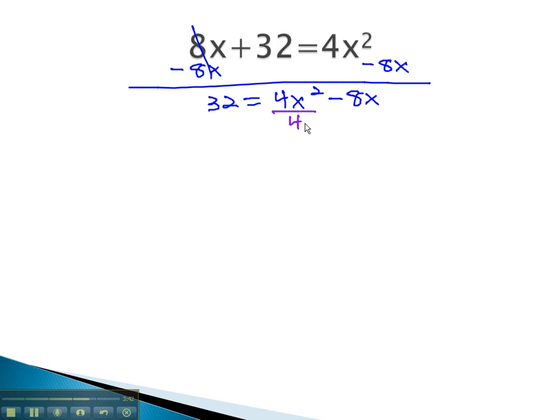We now need to divide by a, making sure there's nothing in front of the x squared. 8 is equal to x squared minus 2x.